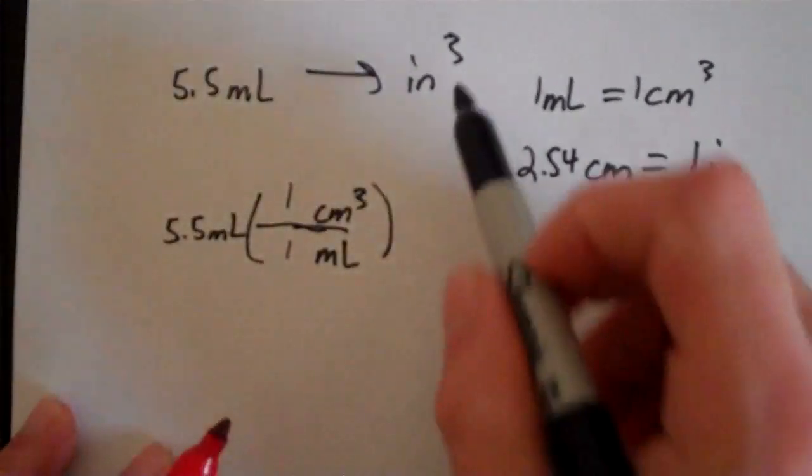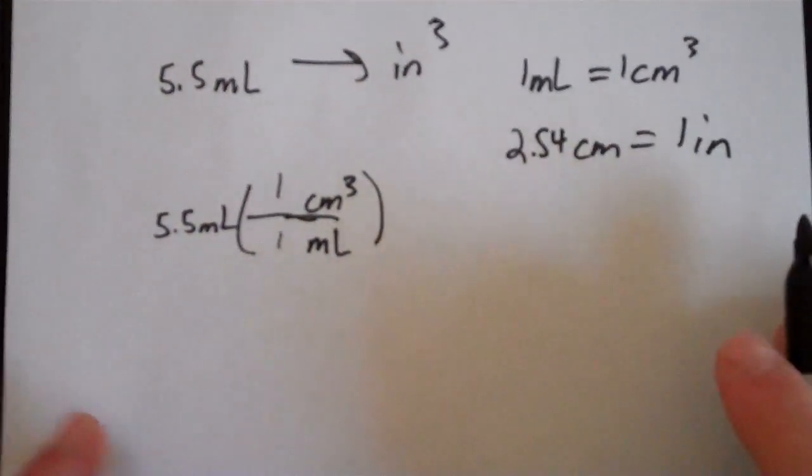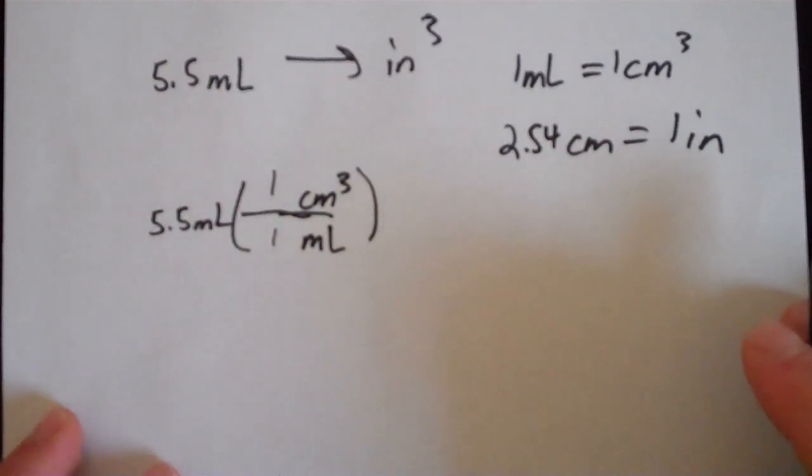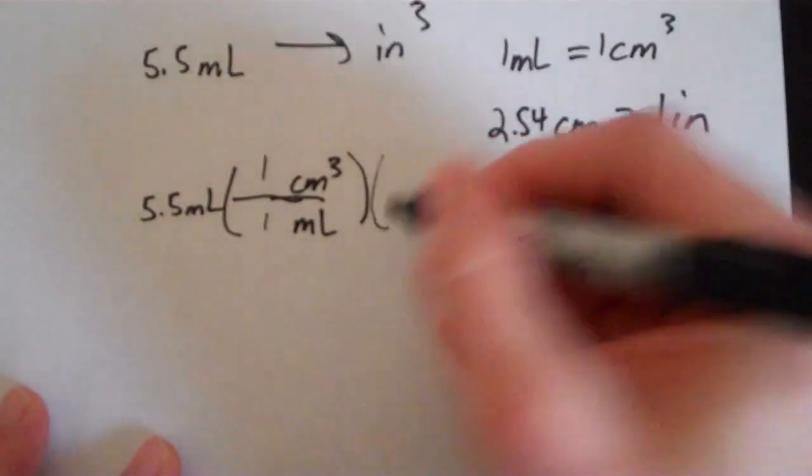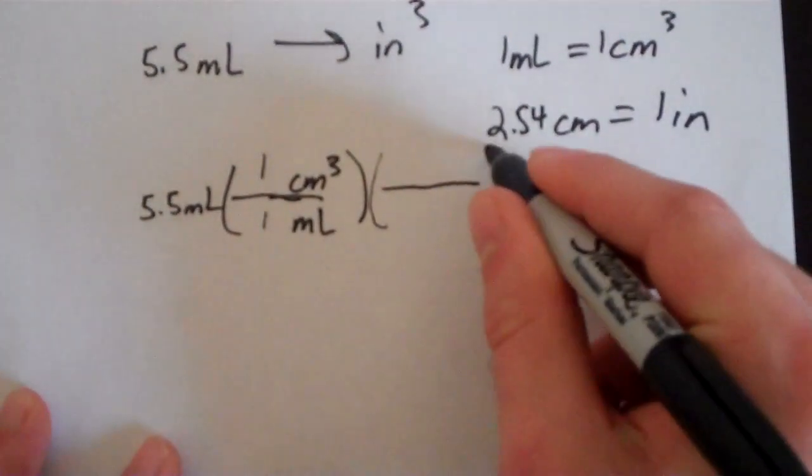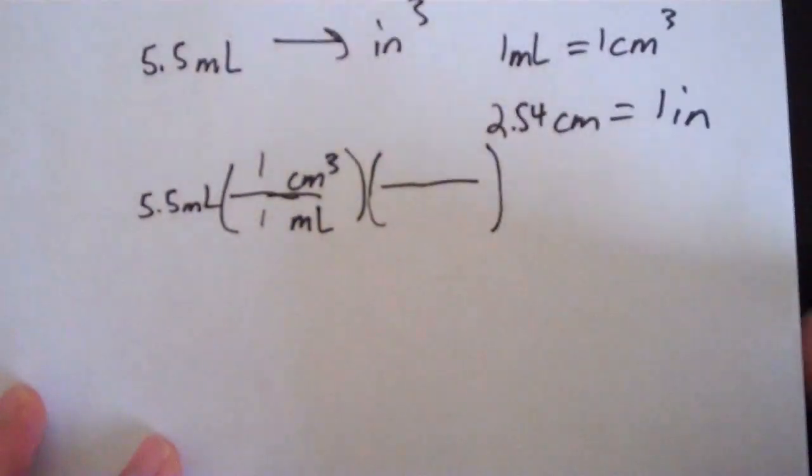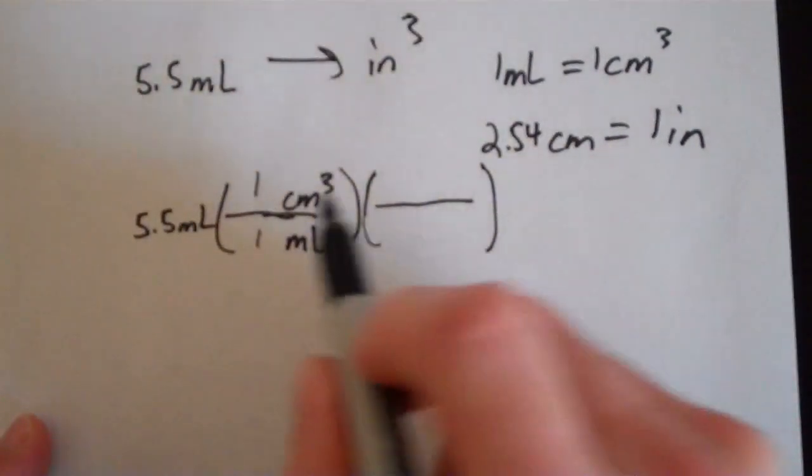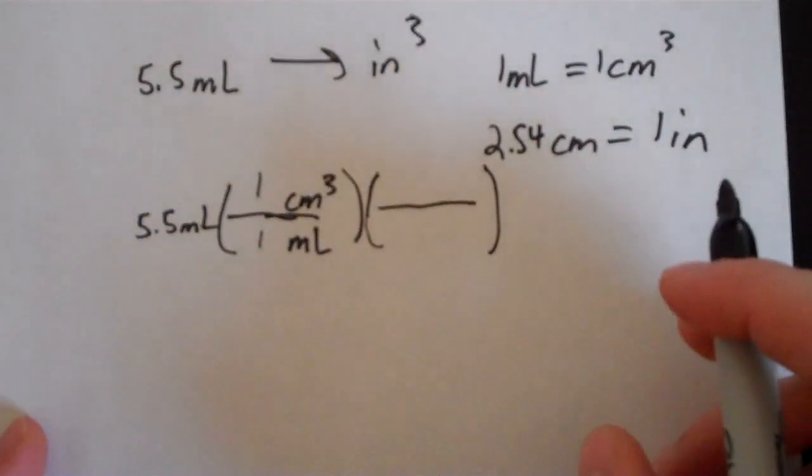We have centimeters cubed, but we need inches cubed, so this conversion problem isn't done yet. We need to introduce a second conversion factor. Can you guess what's going to be on bottom and on top? Well, it's probably going to be cubic centimeters on the bottom and then cubic inches on top.